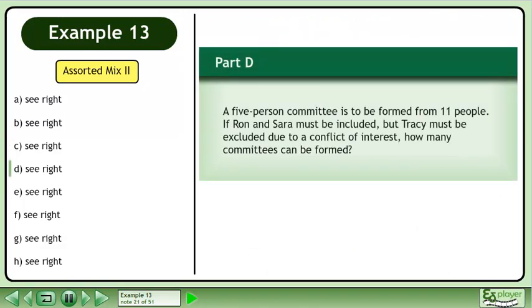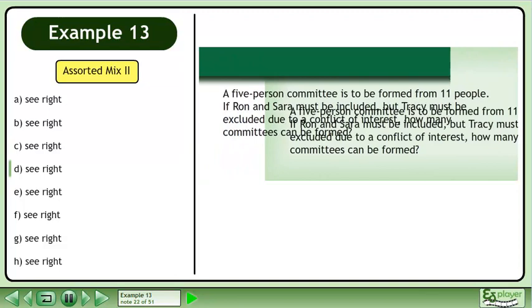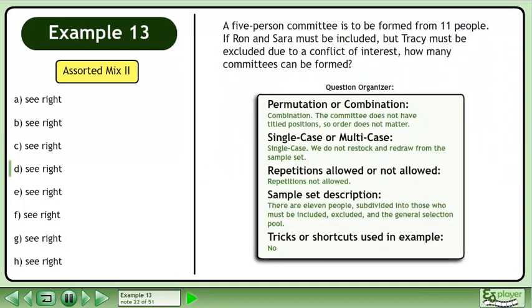Now we'll move on to part D. A five person committee is to be formed from 11 people. If Ron and Sarah must be included, but Tracy must be excluded due to a conflict of interest, how many committees can be formed? Pause the video and organize the information about this question.